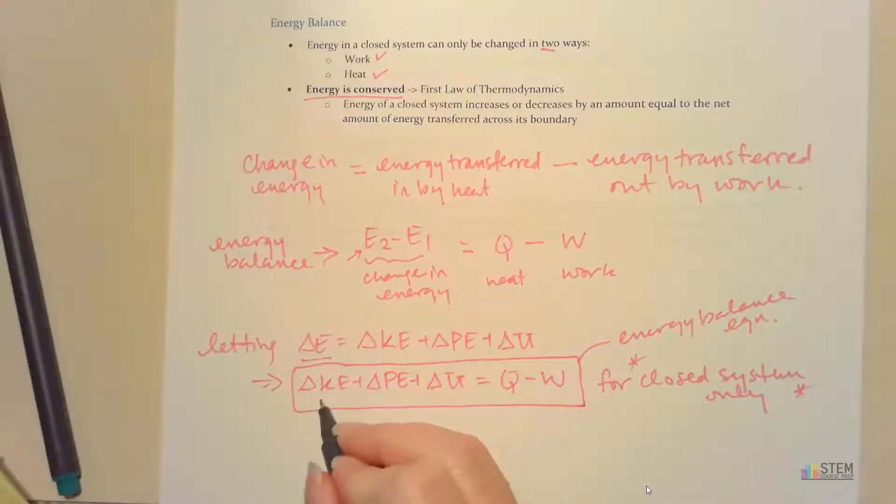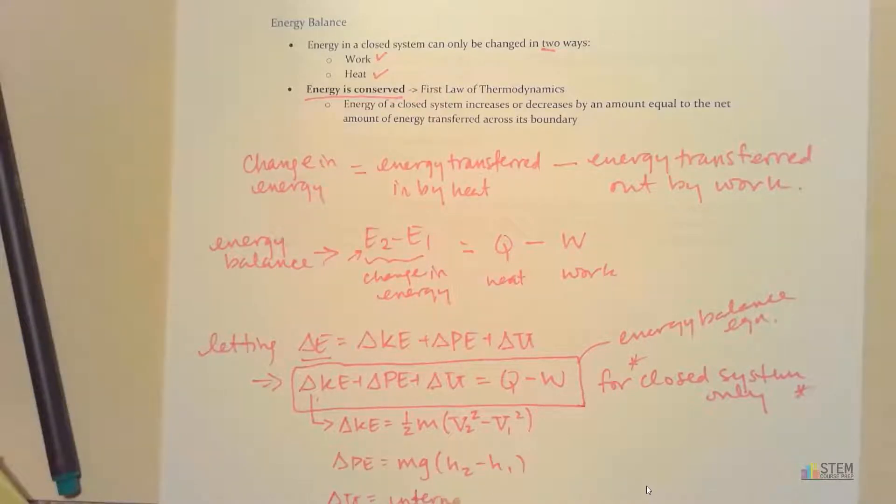So just so it's all in one place, let's remind ourselves what these terms are. Delta KE, that is change in kinetic energy. So that's going to be one half mass times velocity two squared minus velocity one squared. Delta PE is going to be Mg times the change in height. And delta U is internal energy. And that typically will come from the tables, as you will soon see.